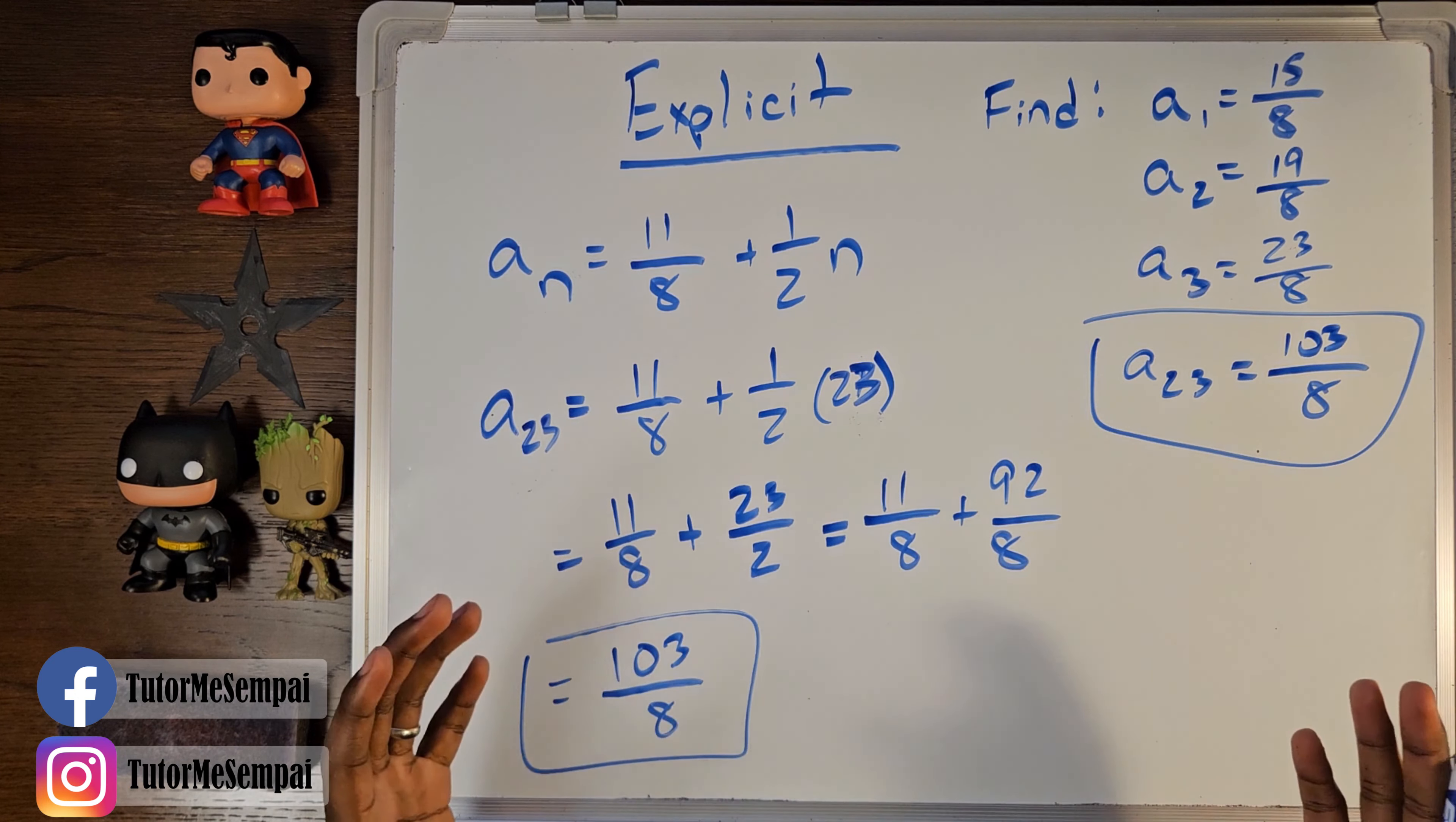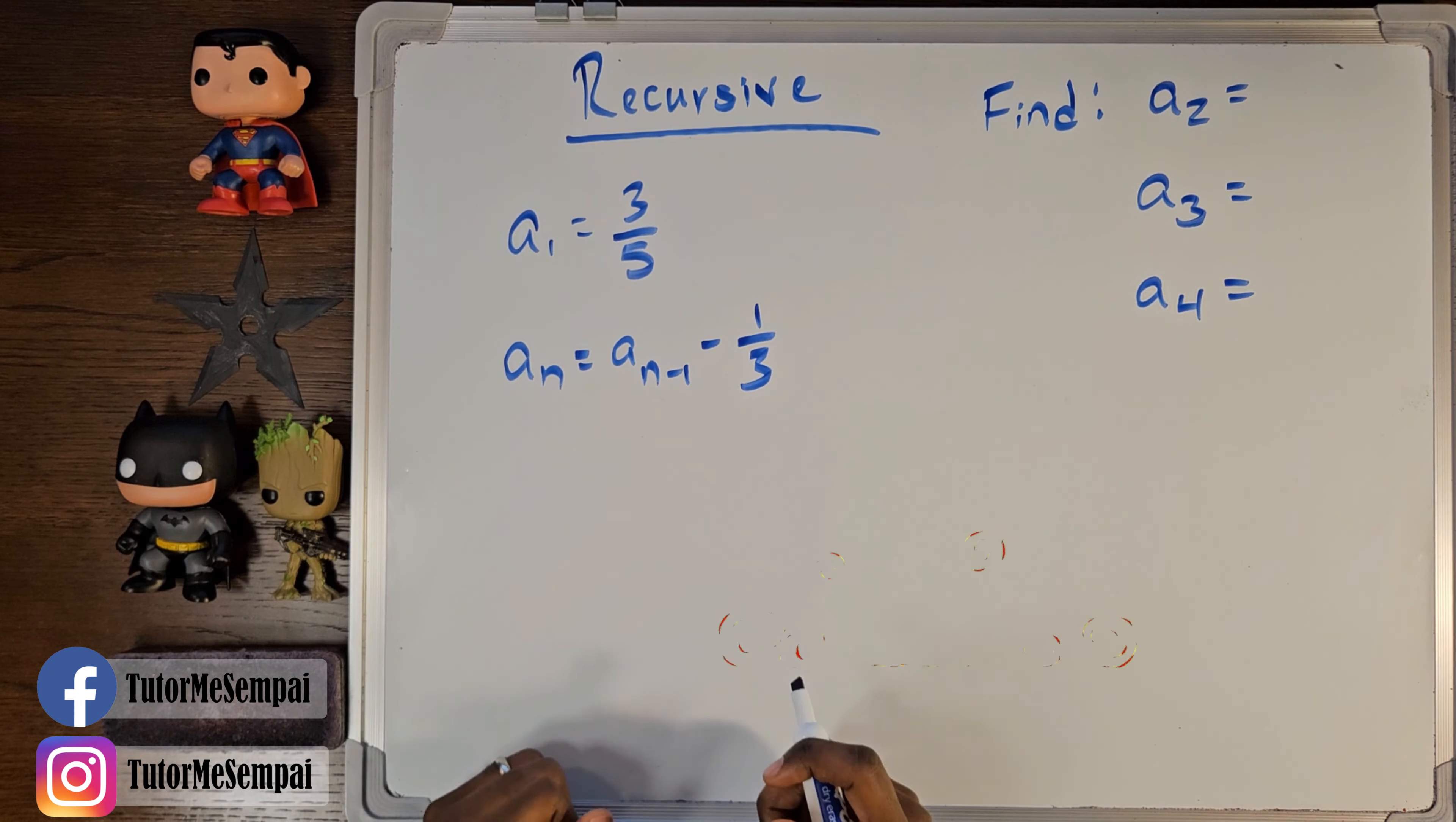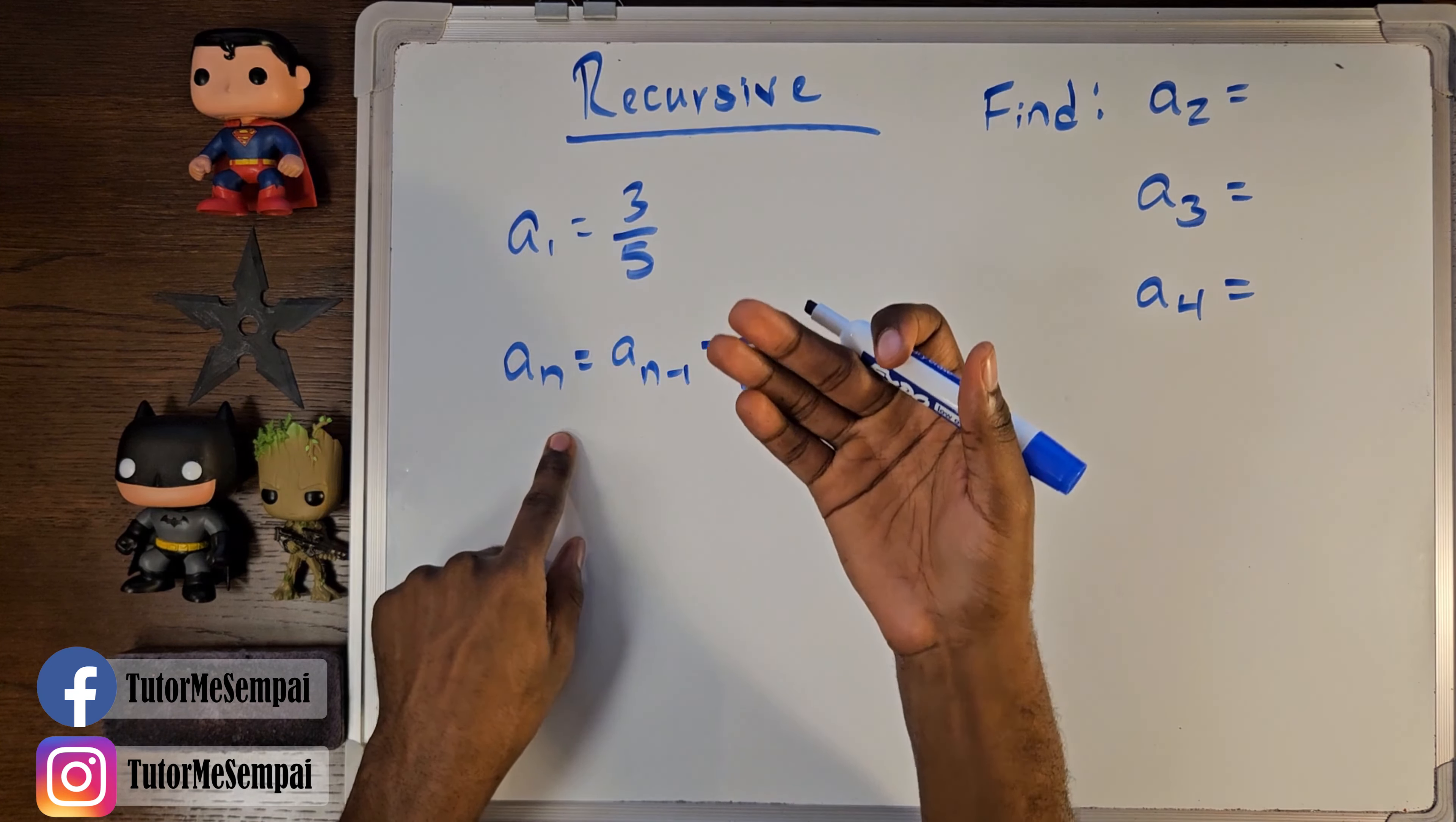Now, we're going to move on to using our recursive formula. In this example, we are trying to use our recursive formula to find our a sub 2, a sub 3, and a sub 4. We're not going to find a sub 1 because we're going to be given a sub 1 for this formula. And remember, our recursive formula really depends on knowing the previous value before you can move on. So, we need a starting point. In this case, our starting point is going to be a sub 1.